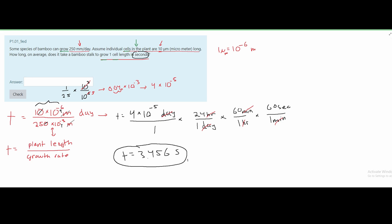Earlier we wrote t equals plant length over growth rate. There is a way to check this: make sure the resulting unit — seconds — is in the numerator. If seconds were in the denominator, like 3.456 divided by one second, that would be incorrect because the unit must be in the numerator with our value. If we had set up meters over day over meters, the day would end up in the denominator and the conversion would not work out. So we must ensure the resulting unit is in the numerator position; otherwise, we need to flip what we plugged in.